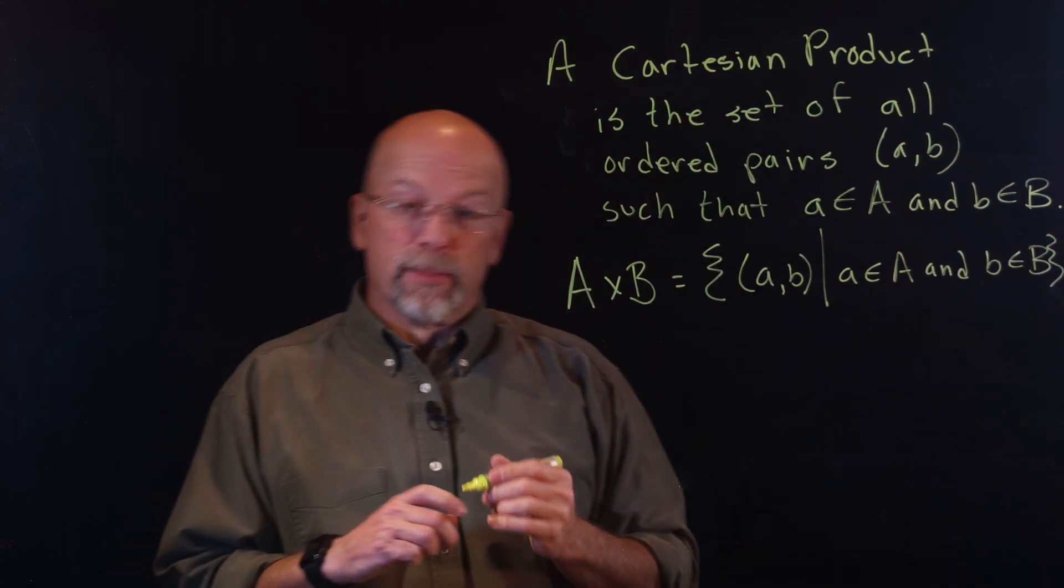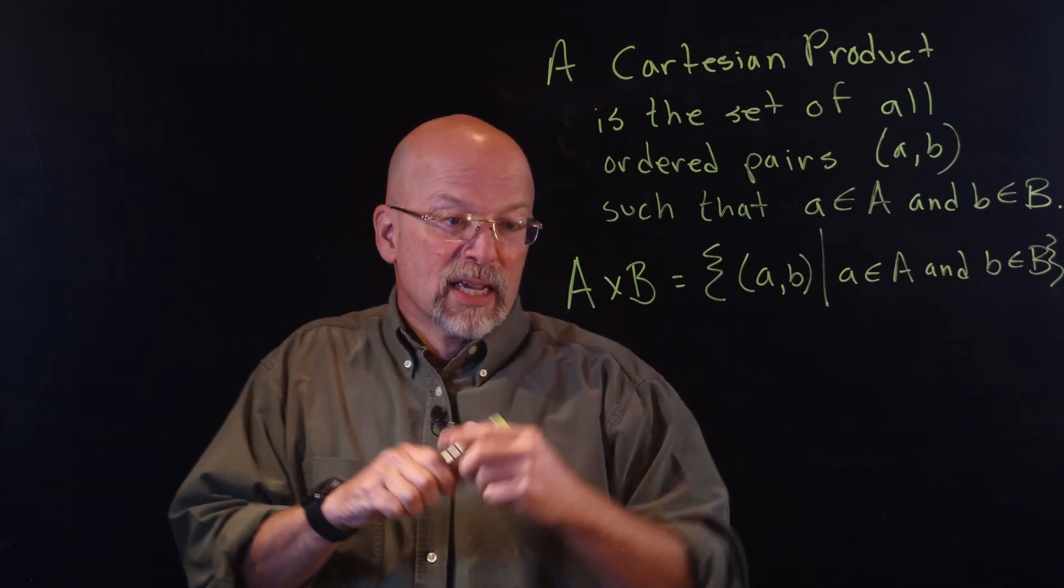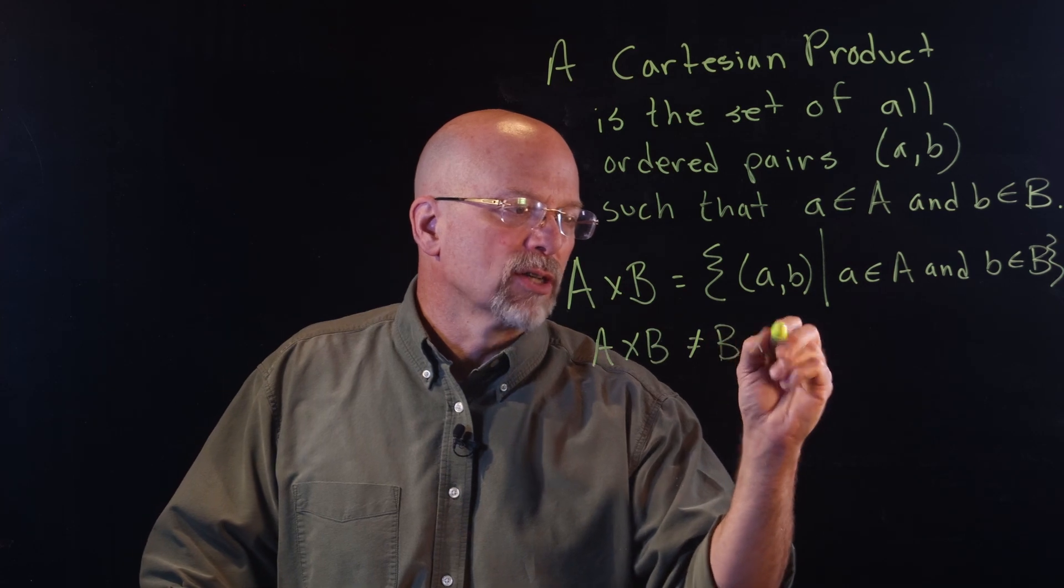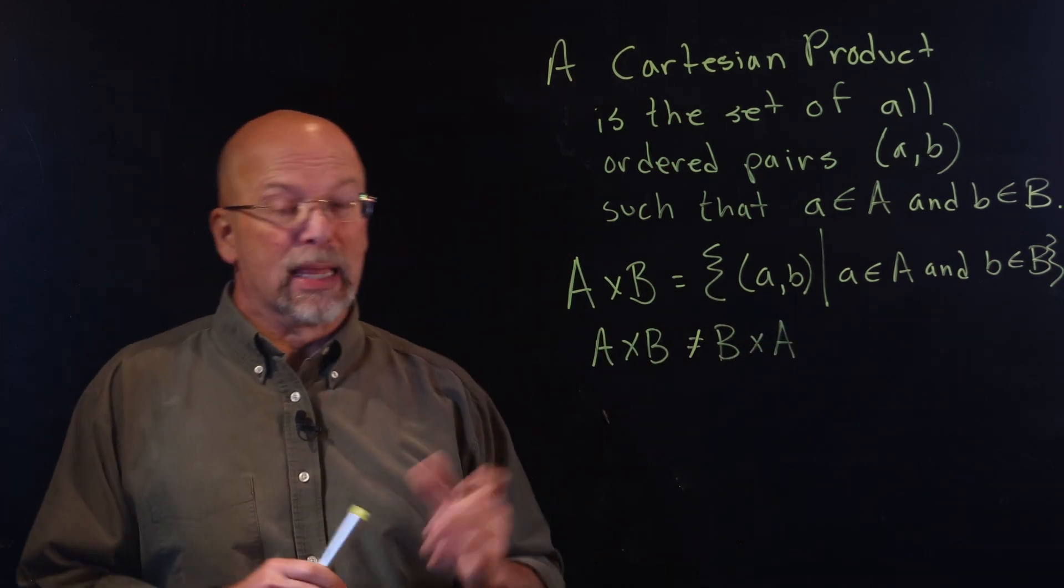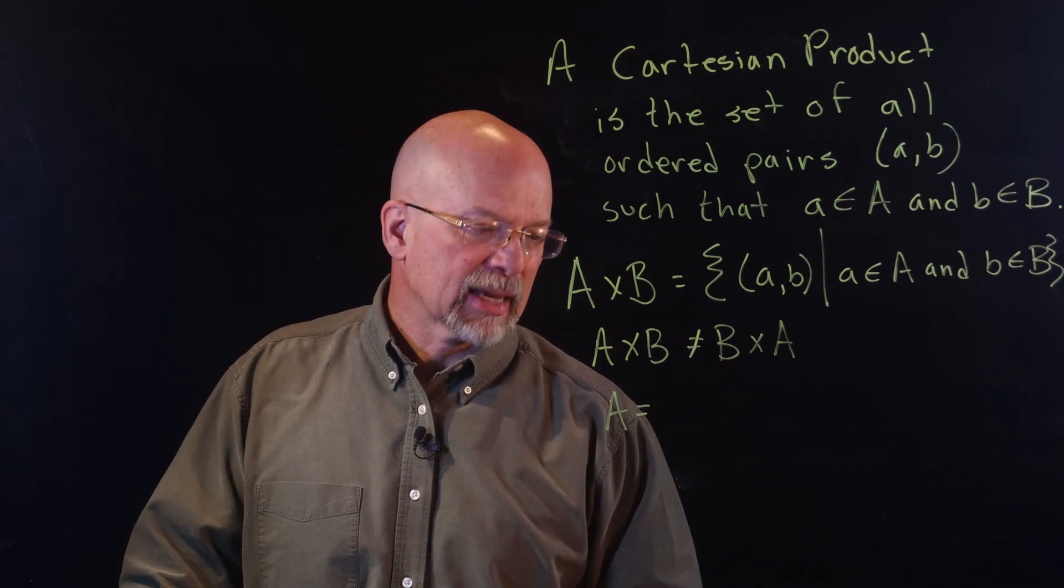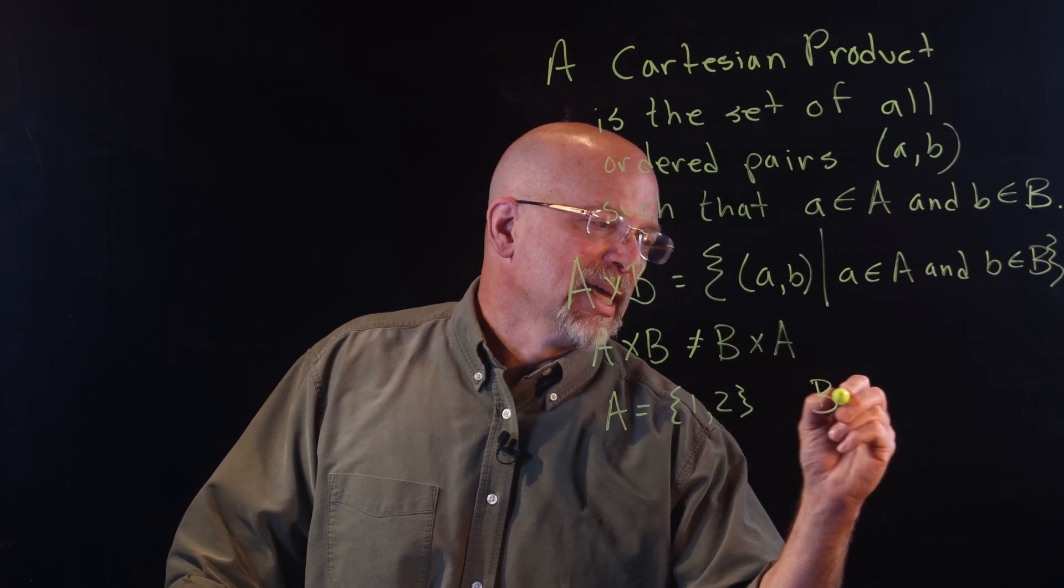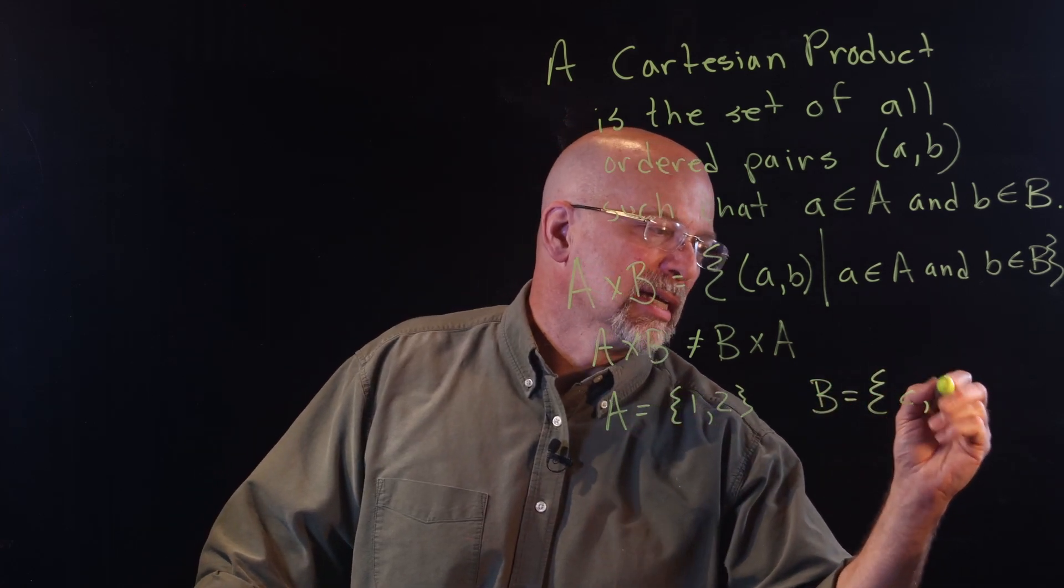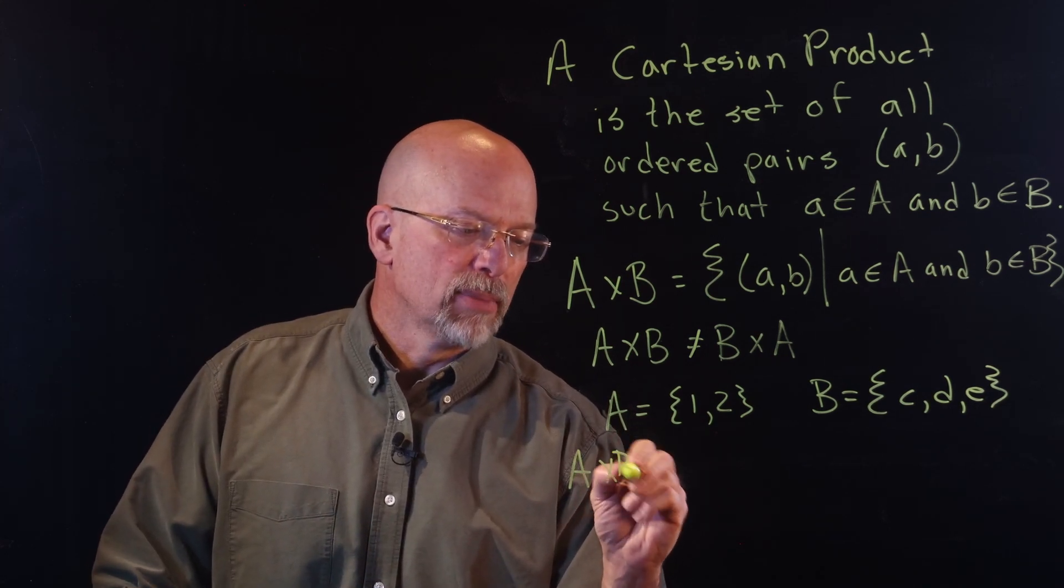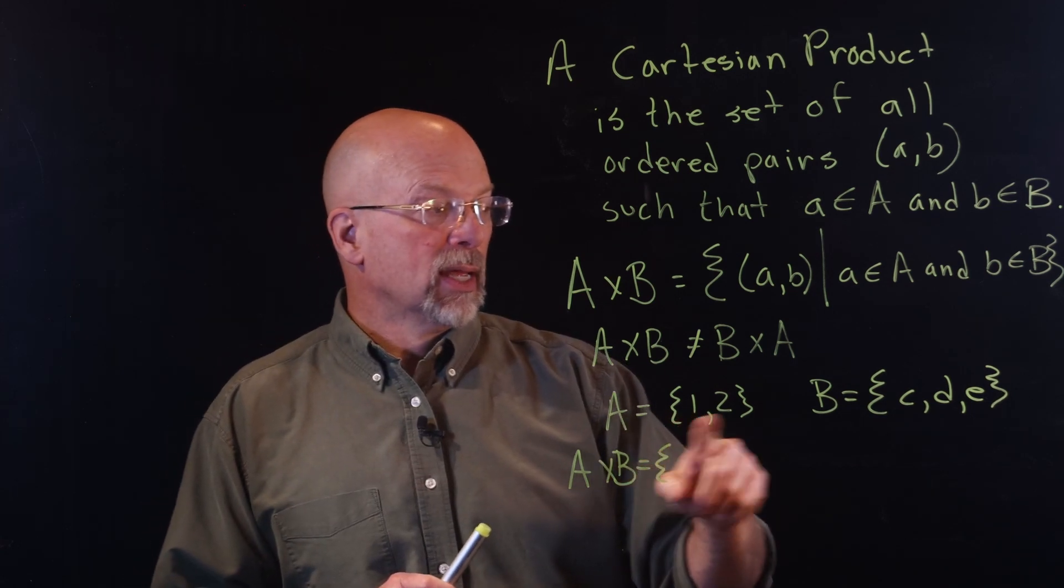Now it's important to understand that the Cartesian product is not commutative. In other words, you can't just simply say A×B is equal to B×A like you would be able to say in multiplication. For example, if I have a set A and it contains {1, 2}, and I have a set B and it contains {C, D, E}, well, then A×B would equal, well, what we have to do is we need to take 1 and make a pair with C and then 1 and make an ordered pair with D and 1 and make an ordered pair with E.